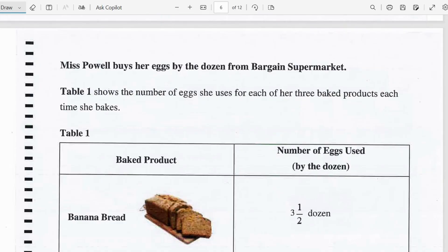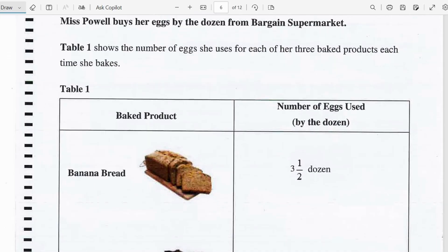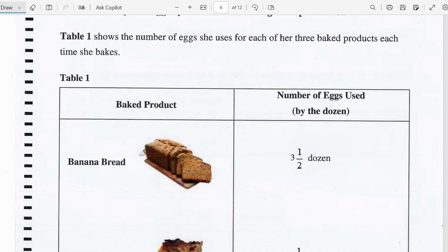Now let's move on to the next question. Miss Powell buys her eggs by the dozen from bargain supermarket. Table 1 shows the number of eggs she uses for each of her 3 baked products each time she bakes.